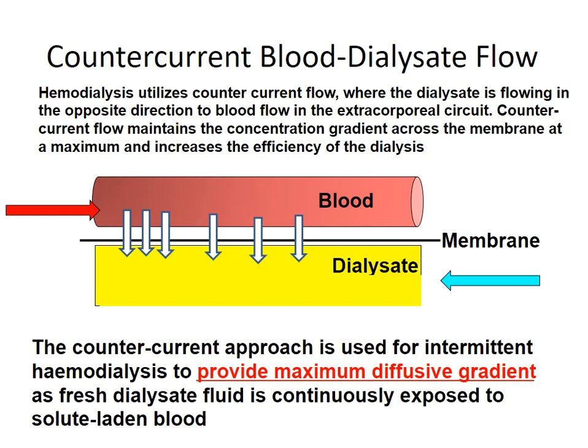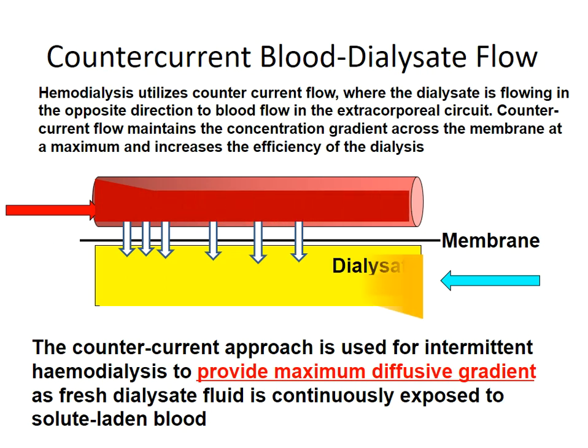The counter-current blood dialysate flow means that the dialysate is flowing in the opposite direction to the blood flow in the extracorporeal circuit. Counter-current flow maintains the concentration gradient across the membrane at a maximum and increases the efficiency of dialysis. The counter-current approach is used for intermittent hemodialysis to provide maximum diffusive gradients and maximum removal of uremic toxins, as fresh dialysate fluid is continuously exposed to solute uremic toxins-laden blood.